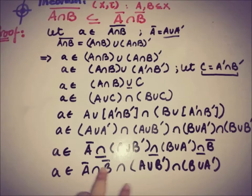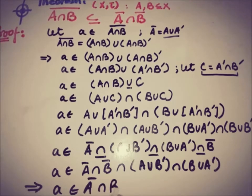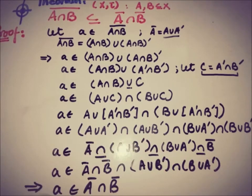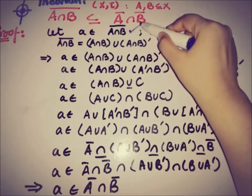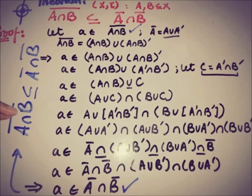So A belongs to the intersection of the sets — that is, A is a common member of all of these sets, and that is why it is a member of their intersection. From this we can write that A is a member of A-bar intersection B-bar. Initially A was taken from the set A intersection B bar, and then by using the relation of the closure and the accumulation of the set, we have proved that A is also a member of A-bar intersection B-bar. This whole thing implies that A intersection B bar is a subset of A-bar intersection B-bar, and our target has been proved.